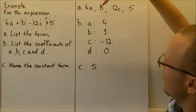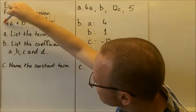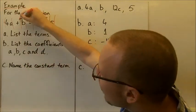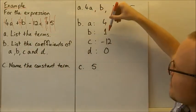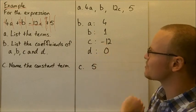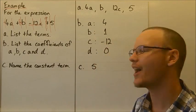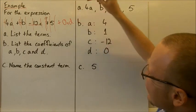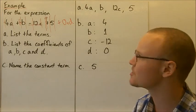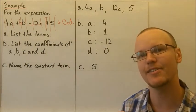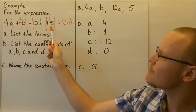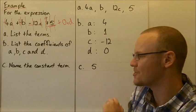Looking at the coefficients: the coefficient of a is plus 4. The coefficient of b is plus 1, because it's 1 times b. The coefficient of c is minus 12 — the whole expression at the front of c is minus 12. The coefficient of d is 0, because we have plus 0 times d — d doesn't appear in the expression. Now, naming the constant term — it's the term that doesn't have any variable attached to it, and the only one not multiplied by a variable at all is 5. So the constant term is 5.